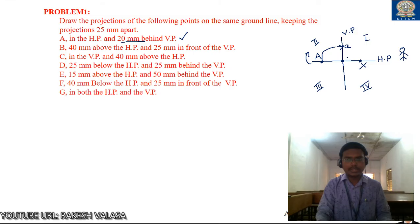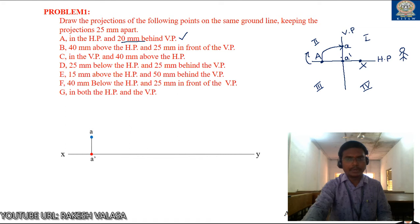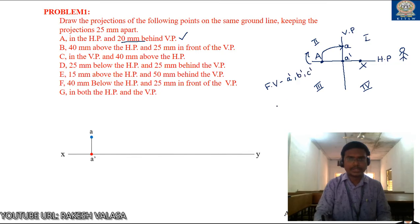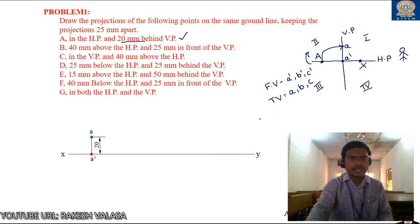This is the top view point A, and this is the front view point A'. First, draw the XY line. The front view A' falls on the XY line; the top view goes above the XY line. Draw the projector line, measure 20mm, and mark point A. Front views are represented with primes — A', B', C' — and top views without primes — A, B, C. Keep the projections 25mm apart from the previous projector.